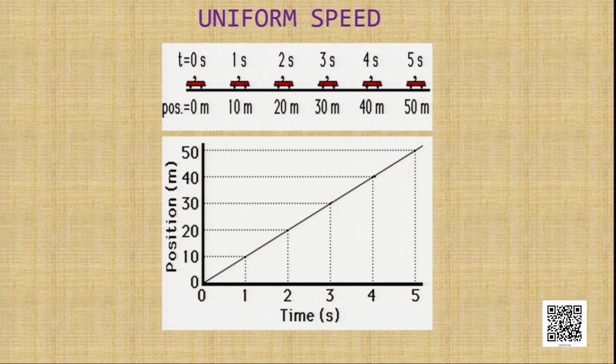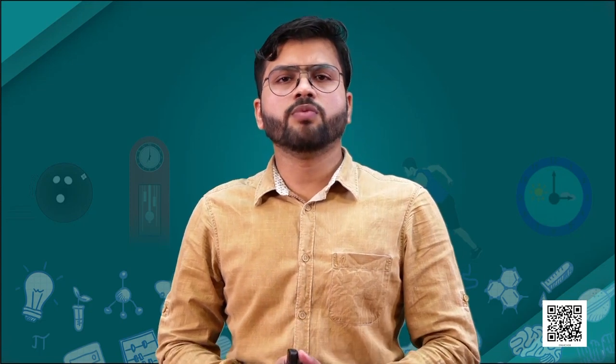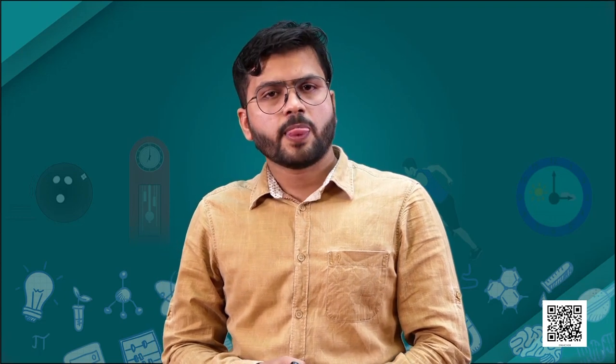After plotting all these points on the graph and connecting them, you will observe the pattern of the graph is a straight line. So we can say the distance-time graph for an object undergoing uniform motion or uniform speed — when the motion is in a straight line — is a straight line.